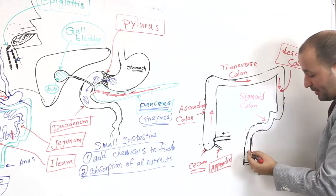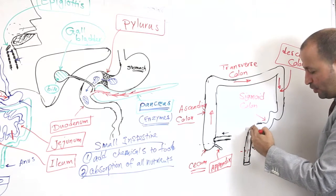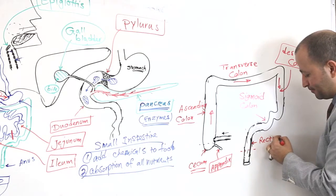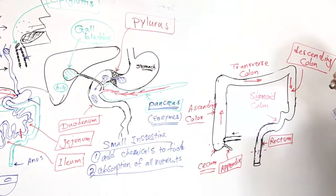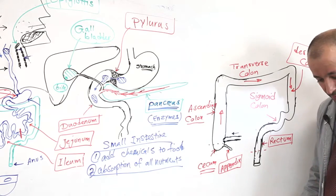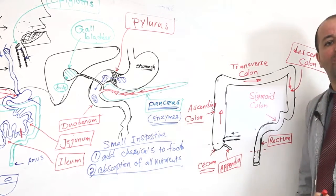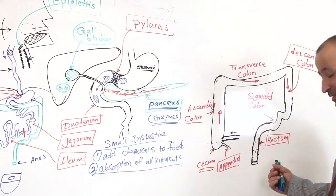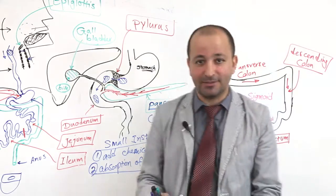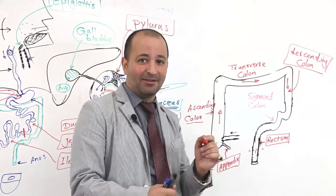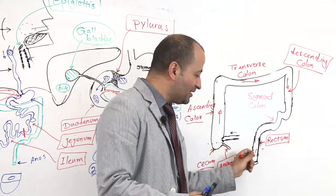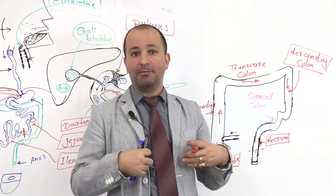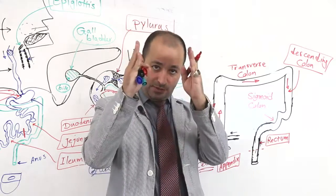Then you go to this part. This part, there is a tube because it becomes straight. We call it rectum. Rectum is the part that in the center becomes straight. The word rectum means straight. Like rectus femoris, the muscle, famous muscle, or rectus abdominis. These are the word rectus means straight.